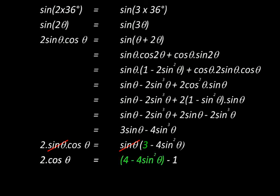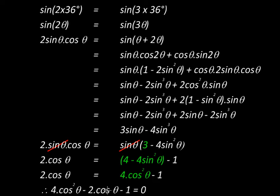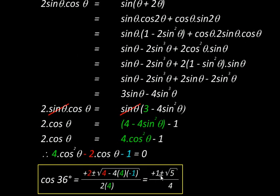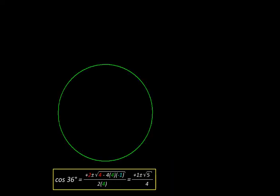Writing 3 as 4 minus 1 and substituting into the bracket gives a quadratic equation purely in cos θ. This quadratic equation can then be solved to find cos θ, or cos 36 degrees. Putting the coefficients into the quadratic formula, we get cos 36 equals 1 plus square root of 5, the whole thing divided by 4.